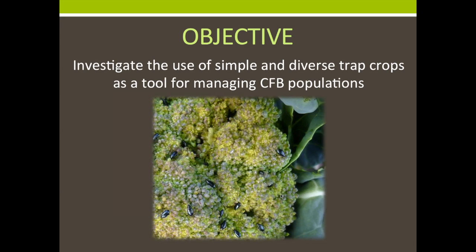Our main objective for experiments conducted over several years in Washington and Idaho was to investigate the use of simple and diverse trap crops as a tool for managing the crucifer flea beetle. We know biodiversity influences ecosystem function and wanted to see if we could apply this to trap crops. Diverse trap crops contain plants with different chemical profiles, different physical structures, and different phenologies that might be more attractive to the crucifer flea beetle.